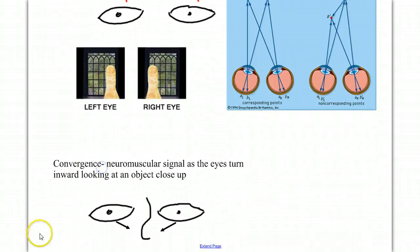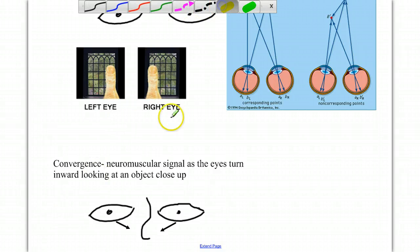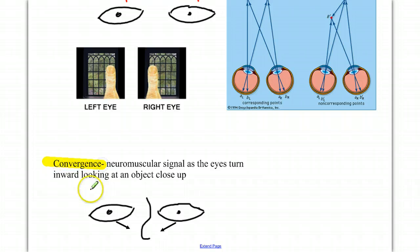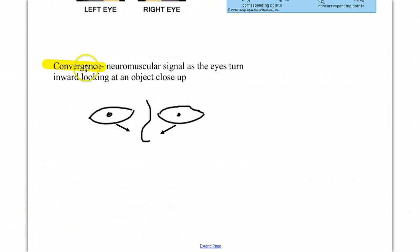Another one of these binocular depth cues is called convergence. Convergence typically comes into play with things that are very close to us. It's a neuromuscular signal. As our eyes turn inward to look at an object up close, the muscles that turn the eyes send information back to the brain to show the angle at which the eyes are looking in, and that gives our brain information about distance. Look at the tip of your nose right now for an example.